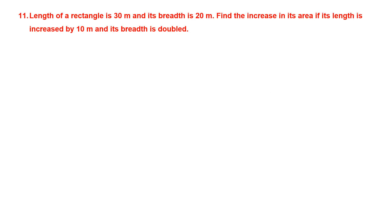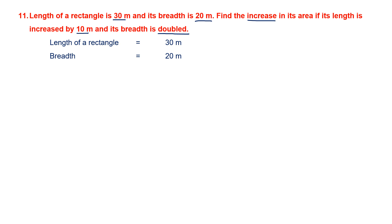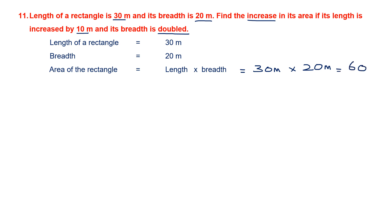Question 11. Length of a rectangle is 30 meters, breadth is 20 meters. Find the increase in area if the length is increased by 10 meters and the breadth is doubled. First let's find the area of the original rectangle. Length is 30 meters, breadth is 20 meters. Area equals length into breadth: 30 into 20. 3 twos are 6, then add the two zeros — the original area is 600 meter squared.